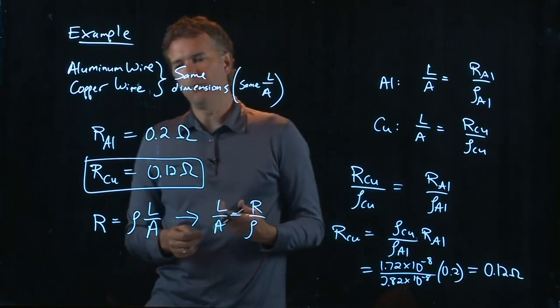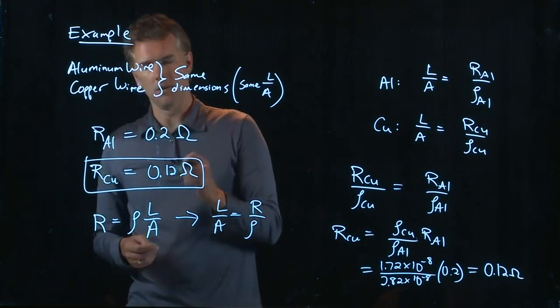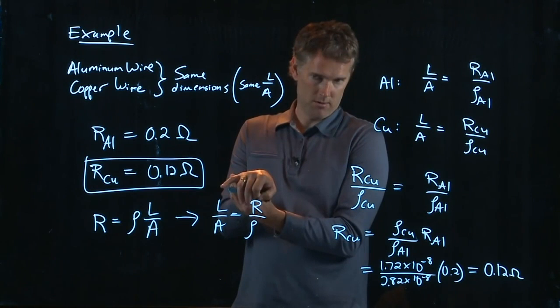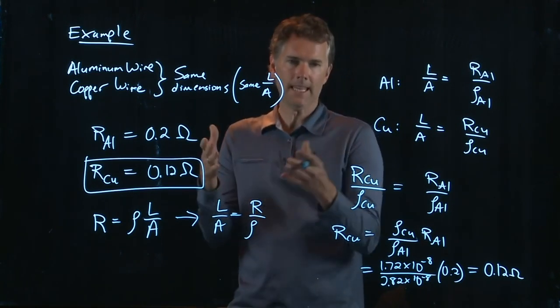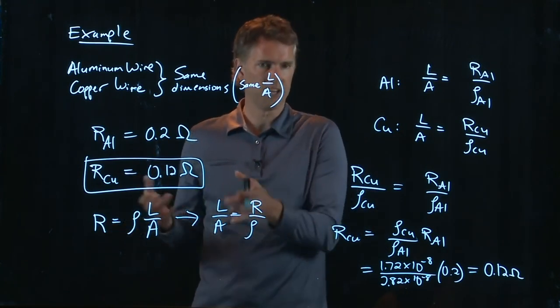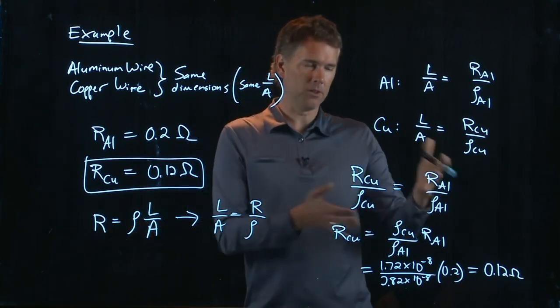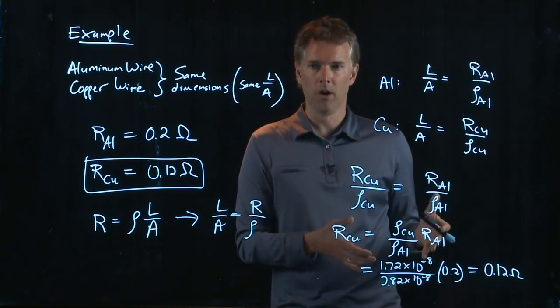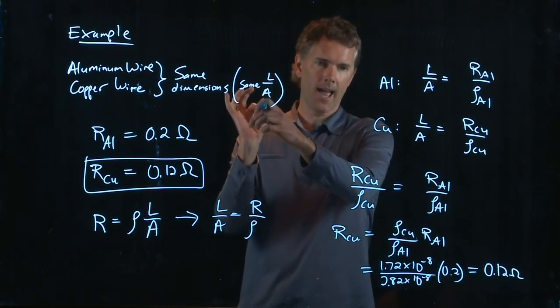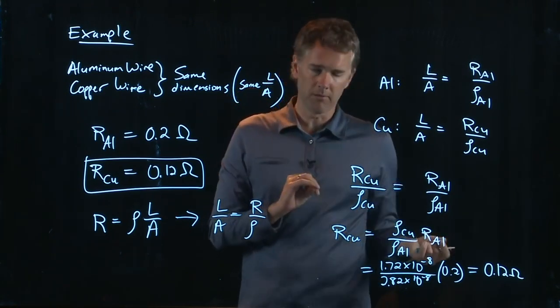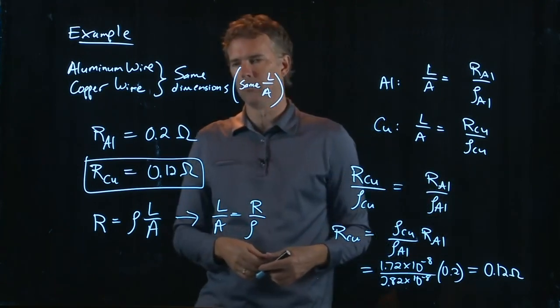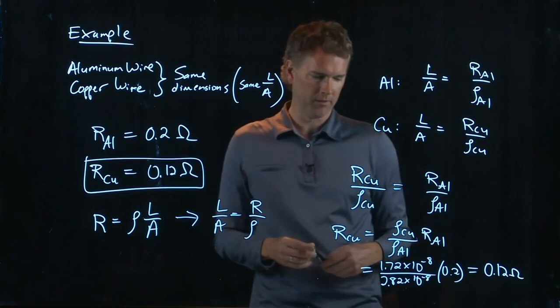All right. If you spend more money on your extension cable, it will also be thicker. So what you'll notice is in the extension cord aisle, there will be a 25-foot extension cord for $10. And then next to it, there'll be a 25-foot extension cord for $20. Look at the cross-sectional area A and what you'll notice is the more expensive one is thicker. It has a bigger A, which is ultimately going to get you a lower overall resistance.